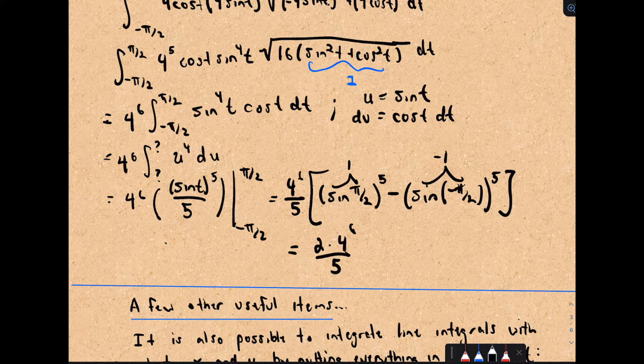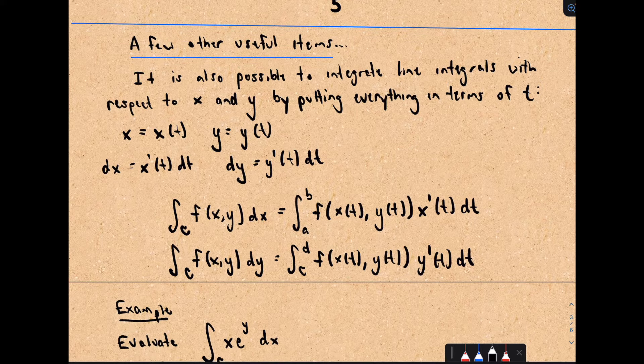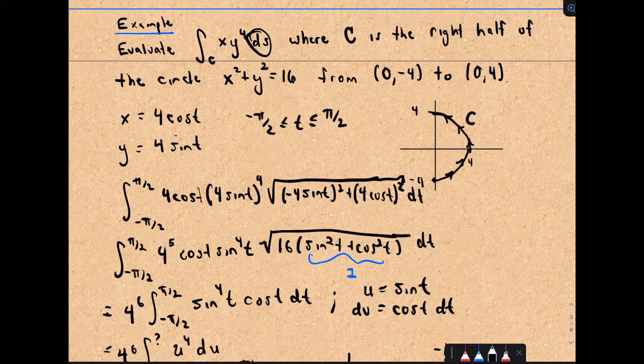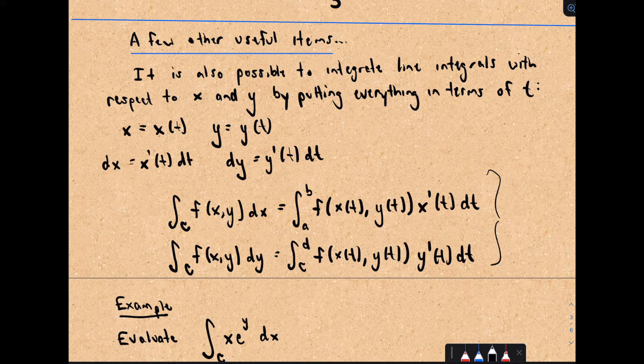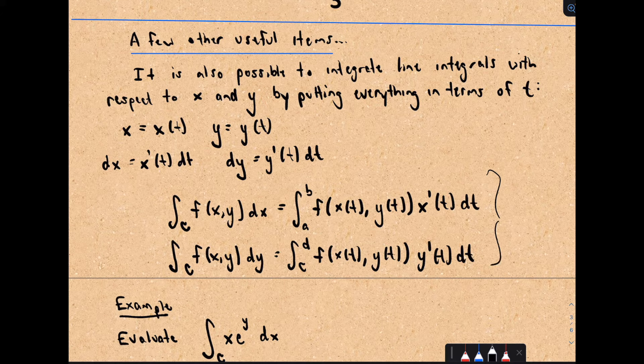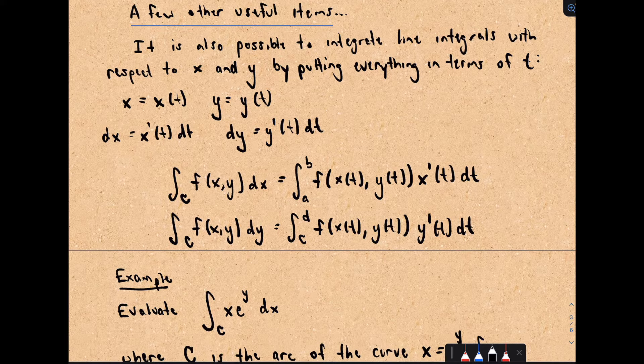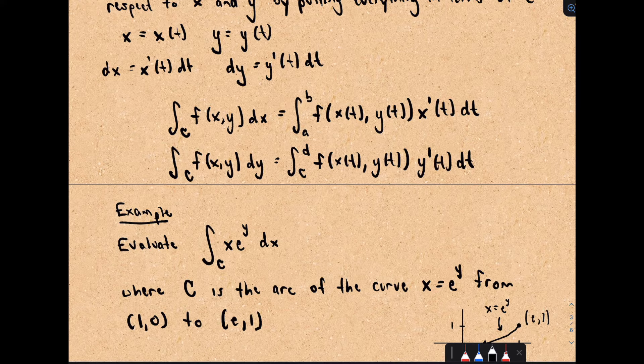In that example we were integrating with respect to arc length S. Sometimes you'll get questions where you're integrating with respect to X or with respect to Y, and we use corresponding formulas for those cases. When you see one of these, you'll typically do a parametrization — you're going to let X or Y be your parameter.